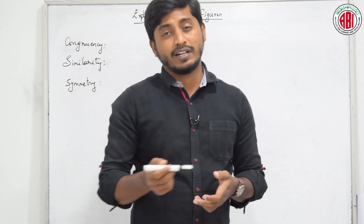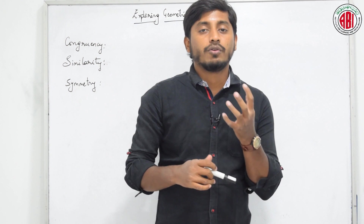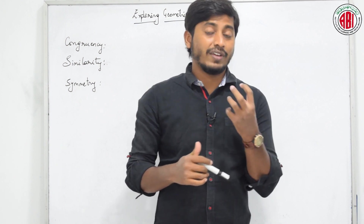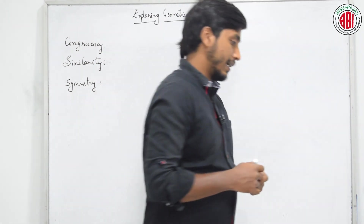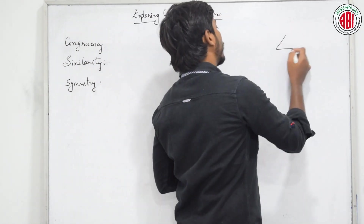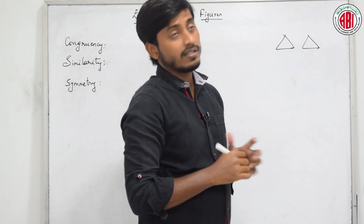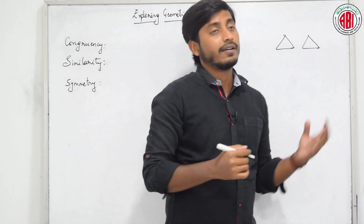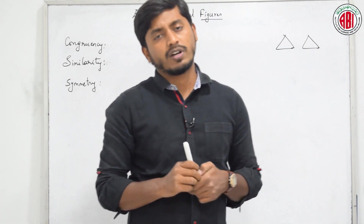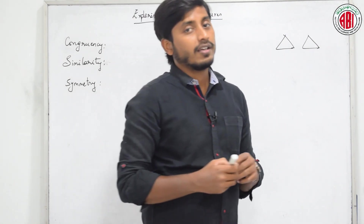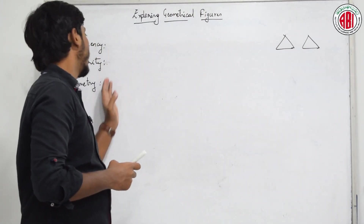We have seen different figures such as circle, square, rectangle. How do we draw them? How do we understand them? How do we compare between two figures? For example, if I say there are two triangles, how do I relate these two? How can I get information about one triangle from using the first triangle? We are going to discuss topics such as congruency, similarity, and symmetry.